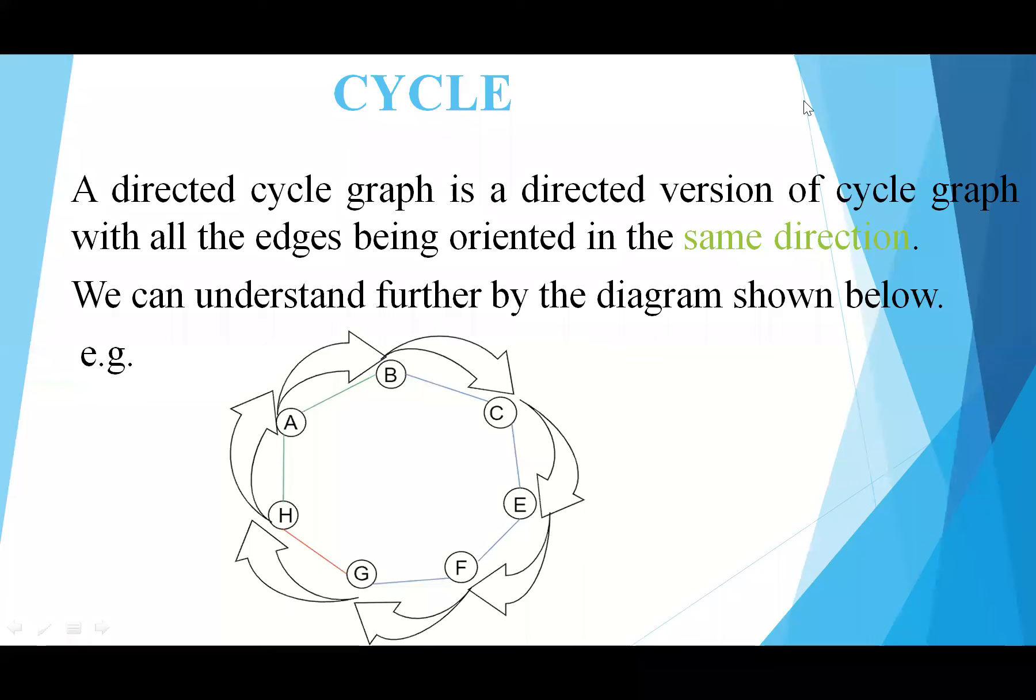A directed cycle graph is a directed version of a cycle graph with all the edges being oriented in the same direction. We can understand further by the diagram shown here, where the arrows are showing the direction of the cycle.